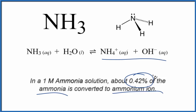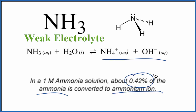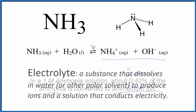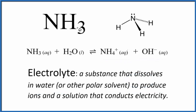Because of that, we say we have an electrolyte, but it's a weak electrolyte. NH3 is considered a weak electrolyte because it does form ions, just not very many of them. I recommend you memorize that ammonia is considered a weak base and a weak electrolyte.